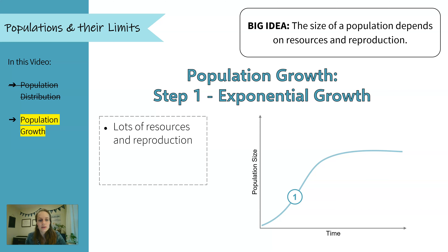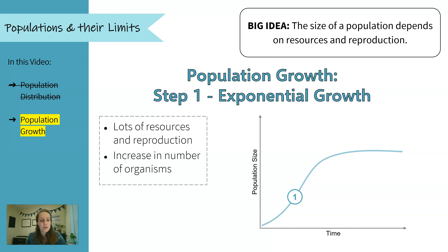The first stage is exponential growth. When a population first moves into an area, there are lots of resources — lots of food, lots of space. Based on those resources, the population can reproduce a lot, so the number of organisms increases, usually exponentially.